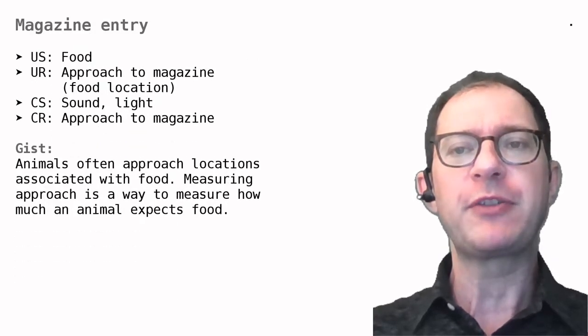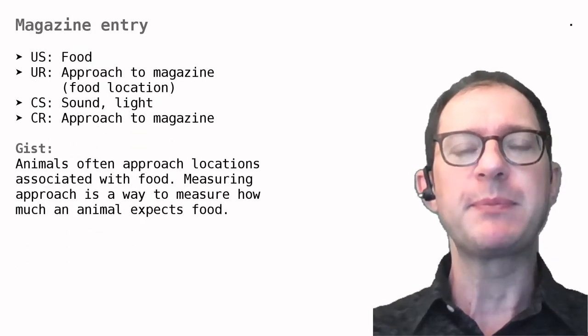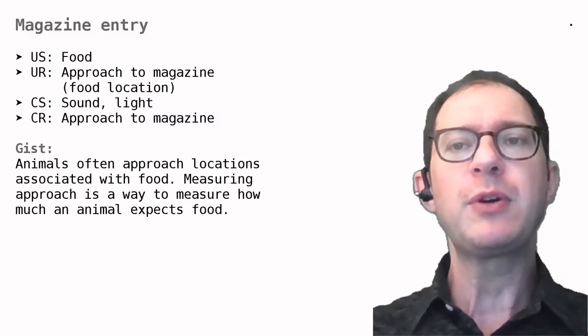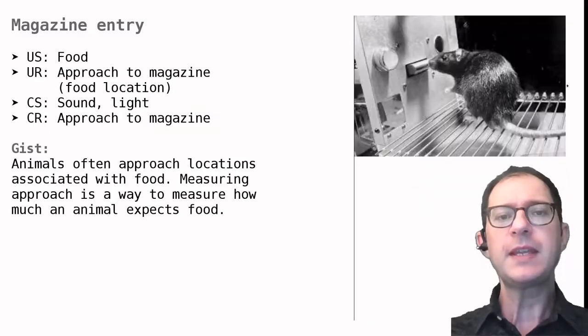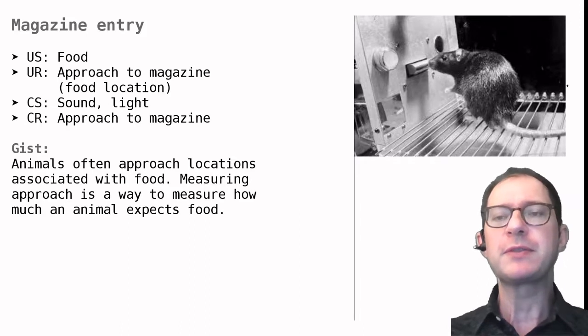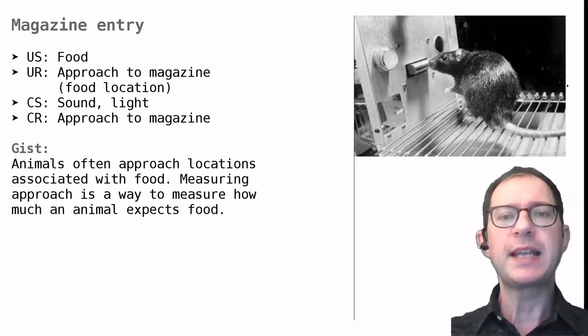The magazine entry preparation has a funny name but it's pretty simple. First we need to know what the magazine is. This is a typical experimental apparatus for a rat. The word magazine comes from an Arabic word meaning storage place. In experimental psychology it refers to the location where food is delivered. This is the area highlighted by the red circle.